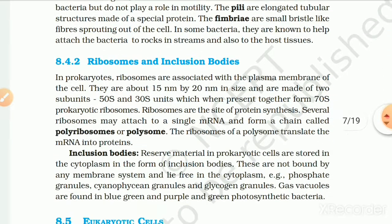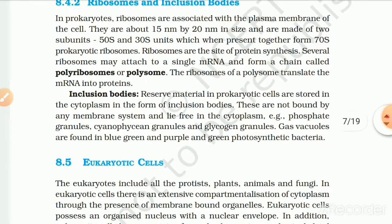8.4.2 Ribosomes and Inclusion Bodies. In prokaryotes, ribosomes are associated with the plasma membrane of the cell. They are about 15 nm by 20 nm in size and are made up of two subunits — 50S and 30S — which together form the 70S prokaryotic ribosome. Ribosomes are the site of protein synthesis. Several ribosomes may attach to a single mRNA and form a chain called a polyribosome or polysome, which translates the mRNA into protein.